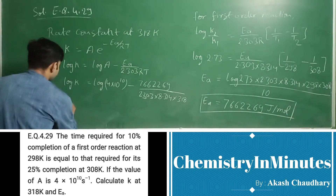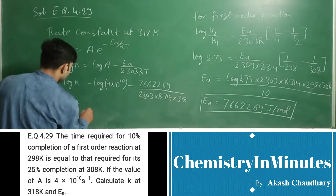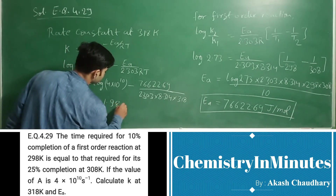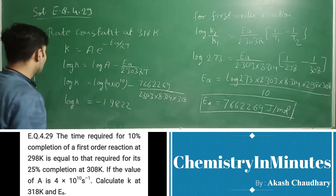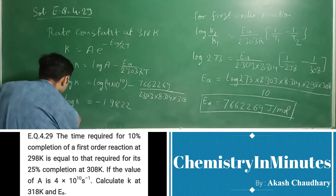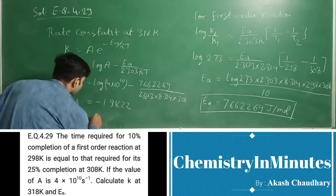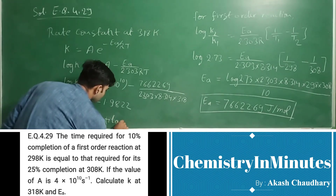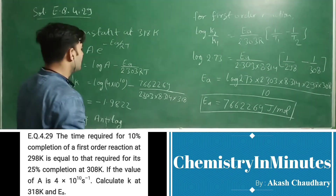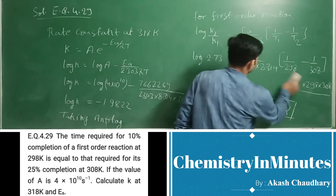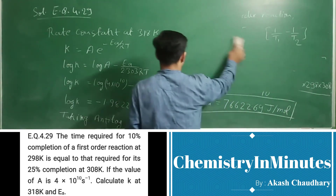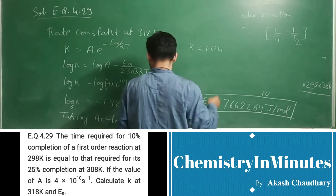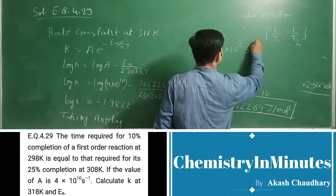On solving this, log k equals minus 1.9822. Taking the antilog, the value of k comes as 1.04 into 10 to the power minus 2 second inverse. So this is the rate constant at 318 Kelvin.